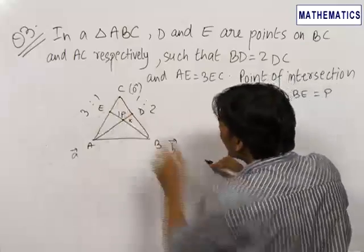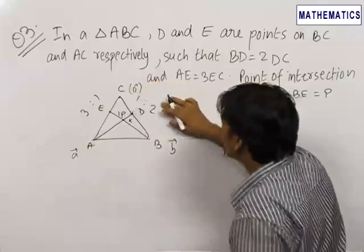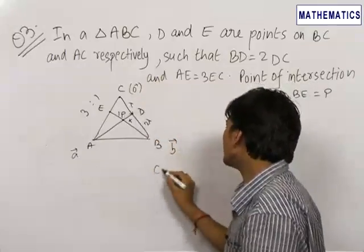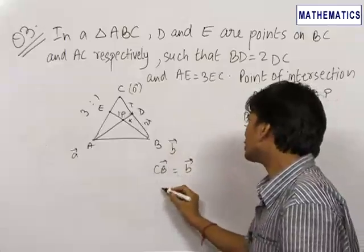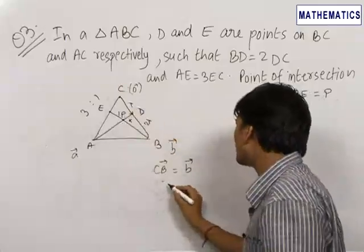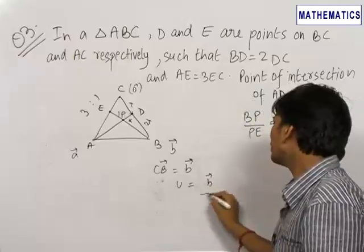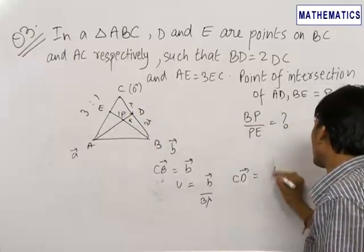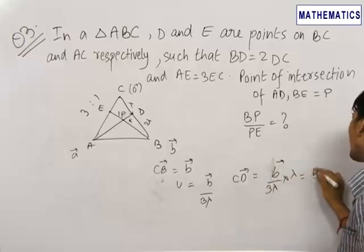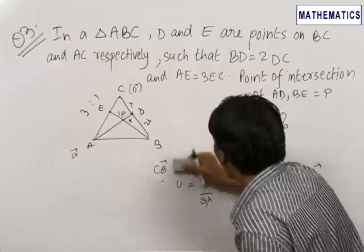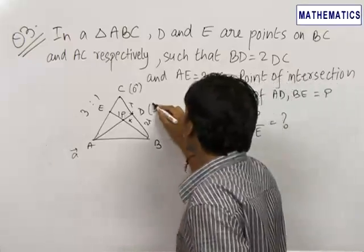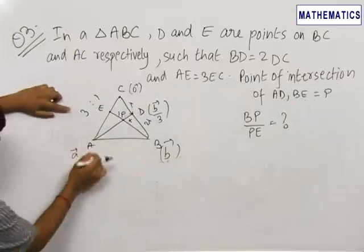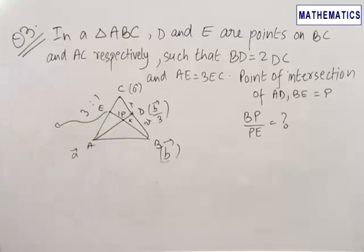Now we can write the position vector of D. Let CD be length lambda, so BD is 2 lambda. Since CB vector equals vector B, the unit vector in the direction of CB is vector B upon 3 lambda. Therefore, CD vector equals vector B upon 3 lambda times lambda, which equals vector B upon 3. So the position vector of D is vector B upon 3. Similarly, the position vector of point E can be written as vector A upon 4.